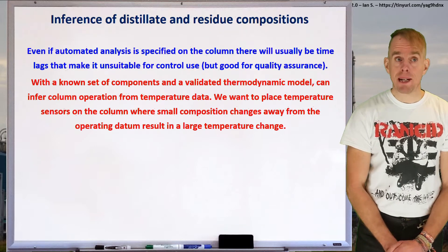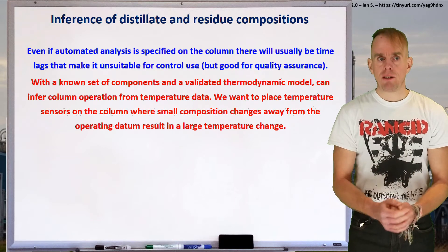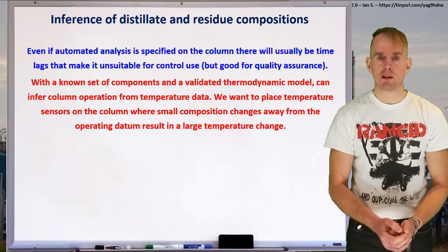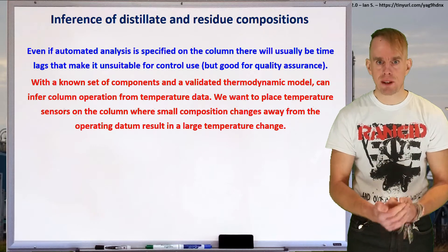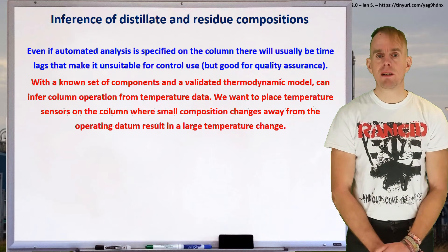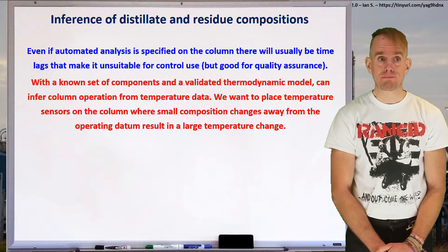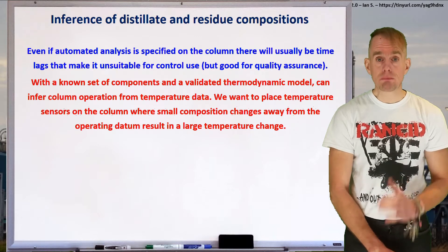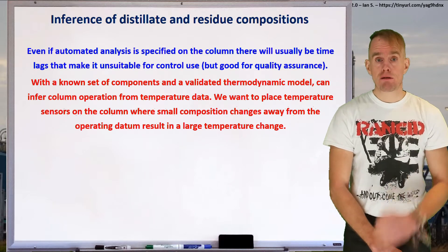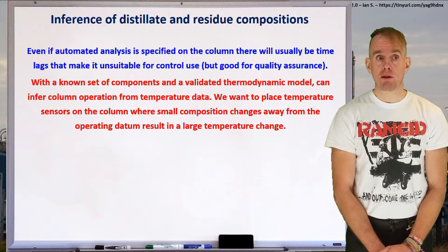So, let's start at the beginning. How do we figure out what our column's doing? The key problem is that automated analysis equipment usually takes time to come to a result, even if you can find analysis equipment for the chemical species that you've got. Very often, the amount of time taken is going to be too slow for control to be used from that. Automated analysis equipment is very good for quality assurance. Laboratory testing is very good for quality assurance. Neither of these are very good for column control.